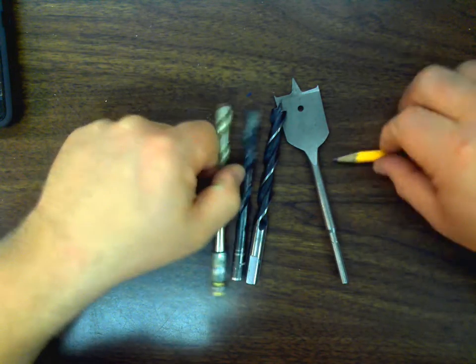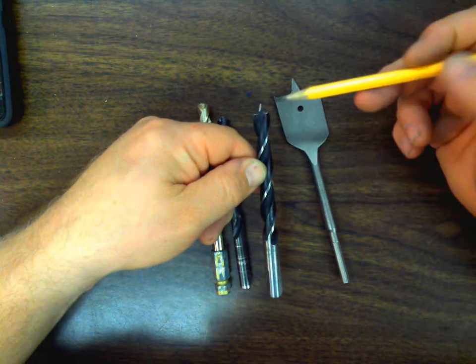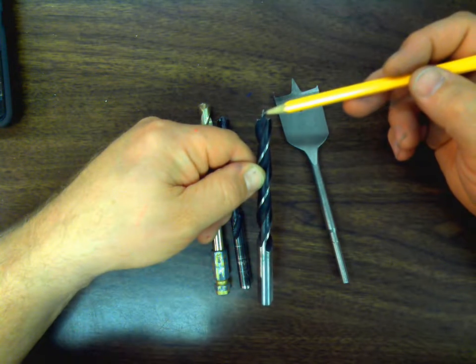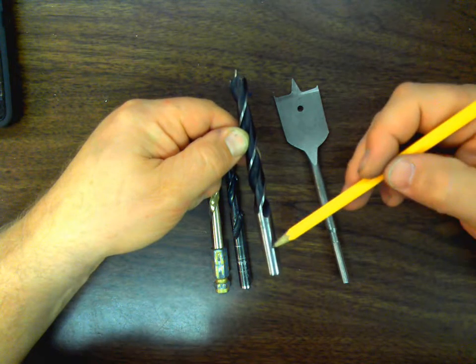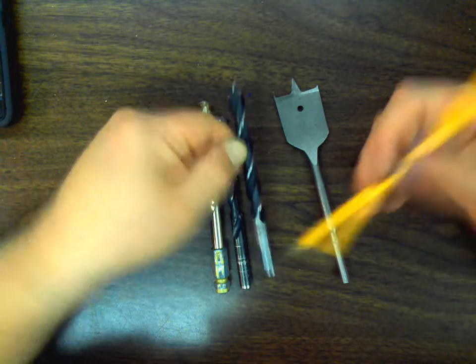The spade drill is a little bit different. We have the tip here. It's got a flute, but it's not spiraled. So it's just kind of like a shovel. We call it a spade. It's just going to cut and kind of pull that material out. And of course it does have the shank as well.